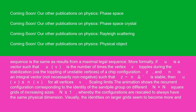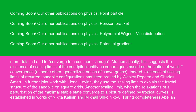Scaling limits: the animation shows the recurrent configuration corresponding to the identity of the sandpile group on different N×N square grids of increasing sizes N ≥ 1, whereby the configurations are rescaled to always have the same physical dimension. Visually, the identities on larger grids seem to become more and more detailed and to converge to a continuous image. Mathematically, this suggests the existence of scaling limits of the sandpile identity on square grids, based on the notion of weak-* convergence or some other generalized notion of convergence. Indeed, existence of scaling limits of recurrent sandpile configurations has been proved by Wesley Pegden and Charles Smart. In further joint work with Lionel Levine, they use the scaling limit to explain the fractal structure of the sandpile on square grids. Another scaling limit, when the relaxations of a perturbation of the maximal stable state converge to a picture defined by tropical curves, is established in works of Nikita Kalinin and Mikhail Shkolnikov.